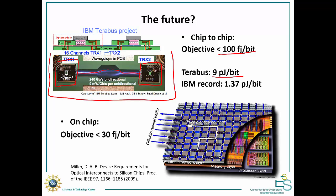What you see in this photo is that the TeraBus project has achieved 9 picojoules per bit. And the record by IBM is actually 1.4 picojoules per bit. So we're still, for chip-to-chip communications, we're still far from the objective which is needed for this technology to make sense to replace copper wires.